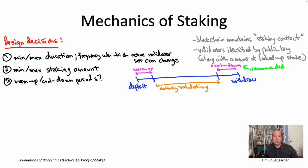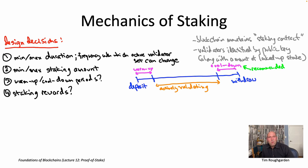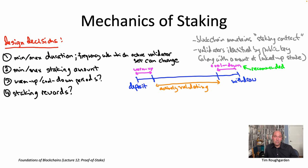A quite important design decision is how do you plan to incentivize nodes to do the right thing — what kind of staking rewards are you going to offer? Validators are still incurring costs in the form of their locked-up capital. They could be doing anything with their economic resources; they've chosen to commit it to securing this protocol for some period of time, and there's an opportunity cost to using those funds that way. So there really is still a need to compensate validators for the capital costs they incur.